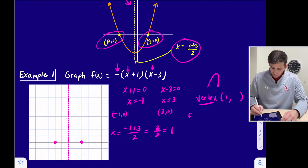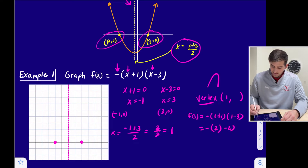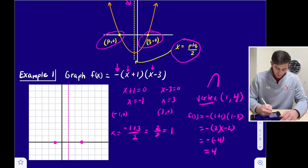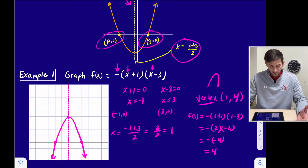So f(1) = −(1 + 1)(1 − 3). That gives us −(2)(−2). 2 times negative 2 is negative 4, and the opposite of negative 4 is 4. So our vertex is at (1, 4). We can plot that and then draw the sides of our parabola. The parabola is opening down, which is what we expected from the negative sign, and it looks good.